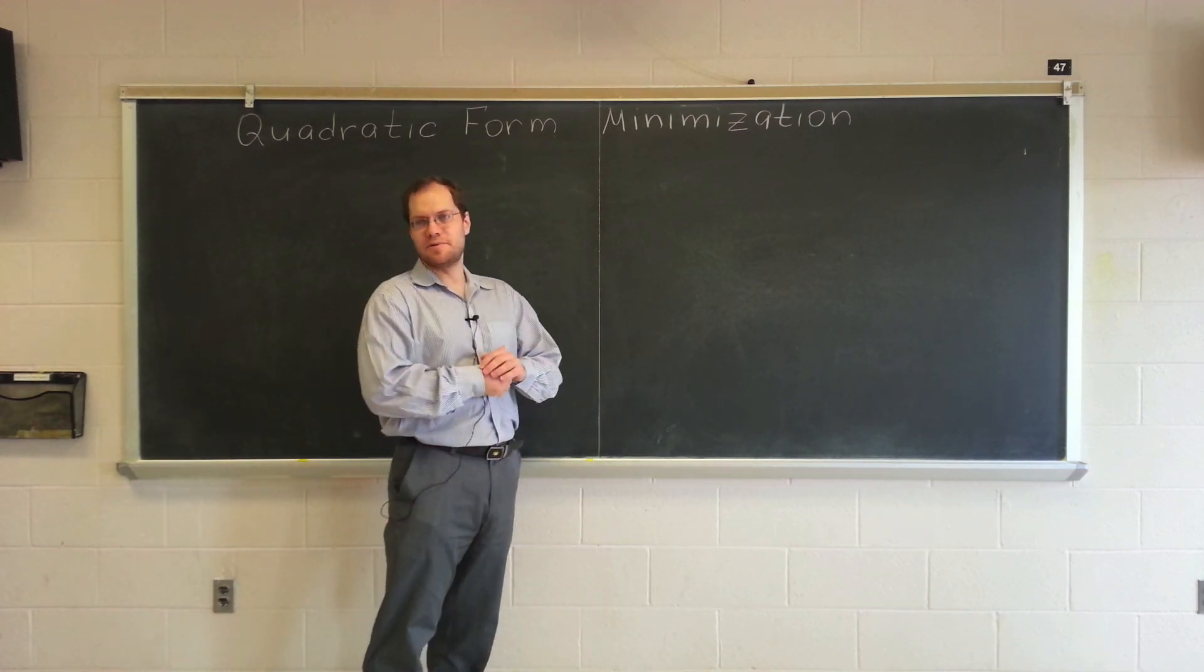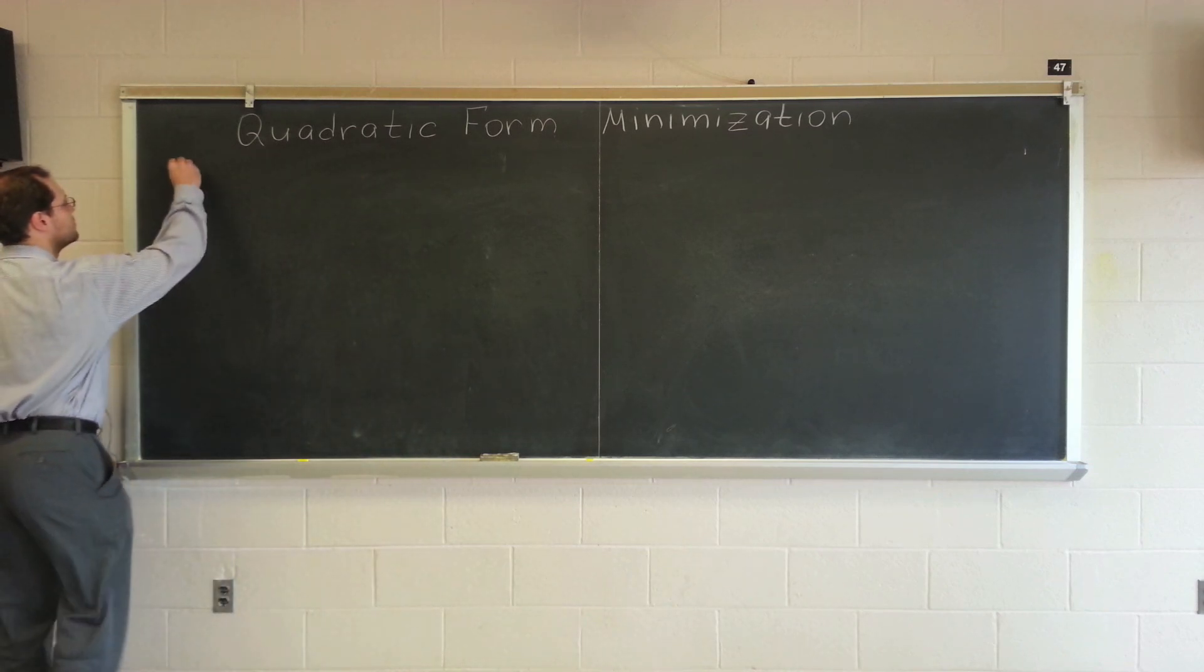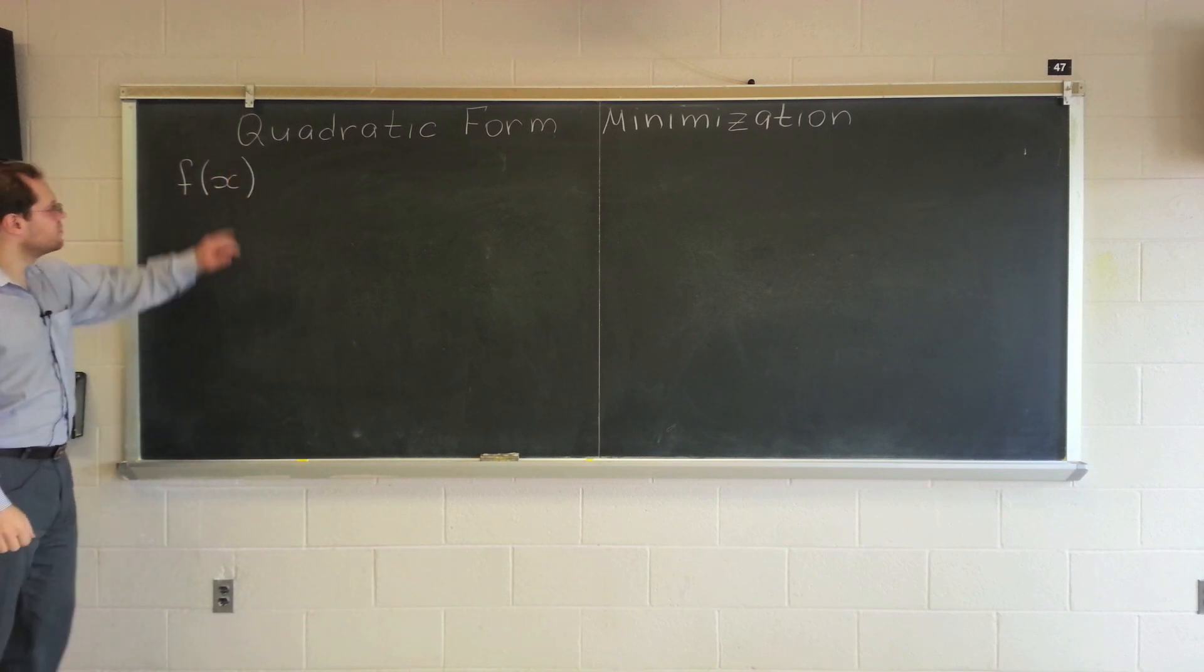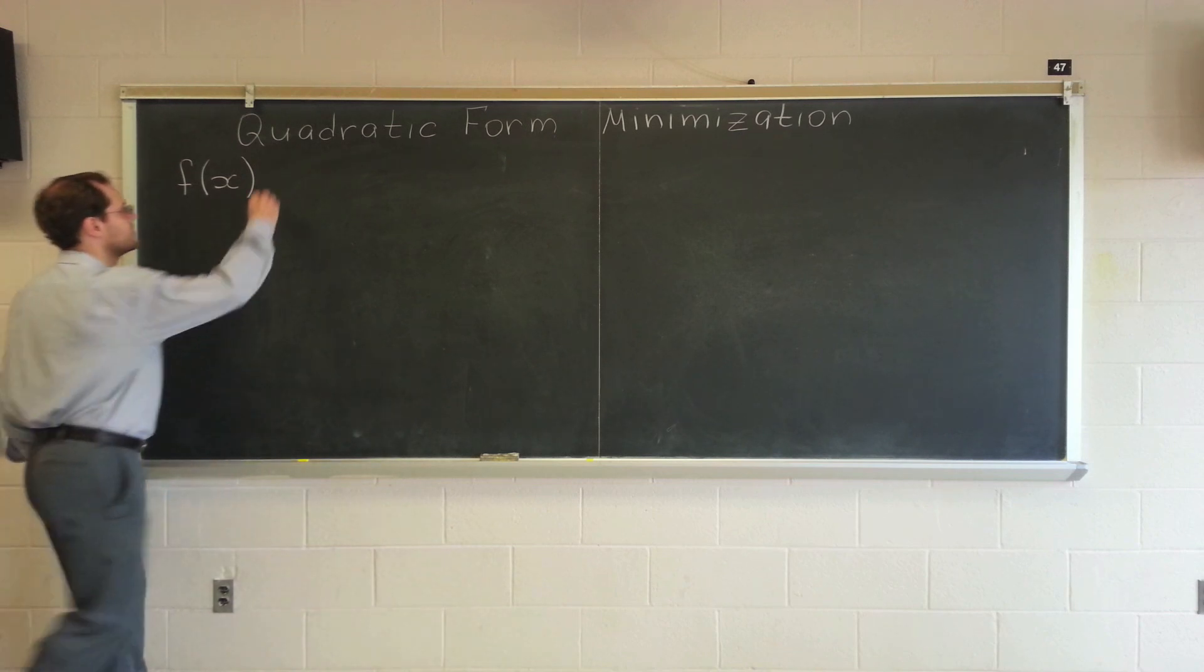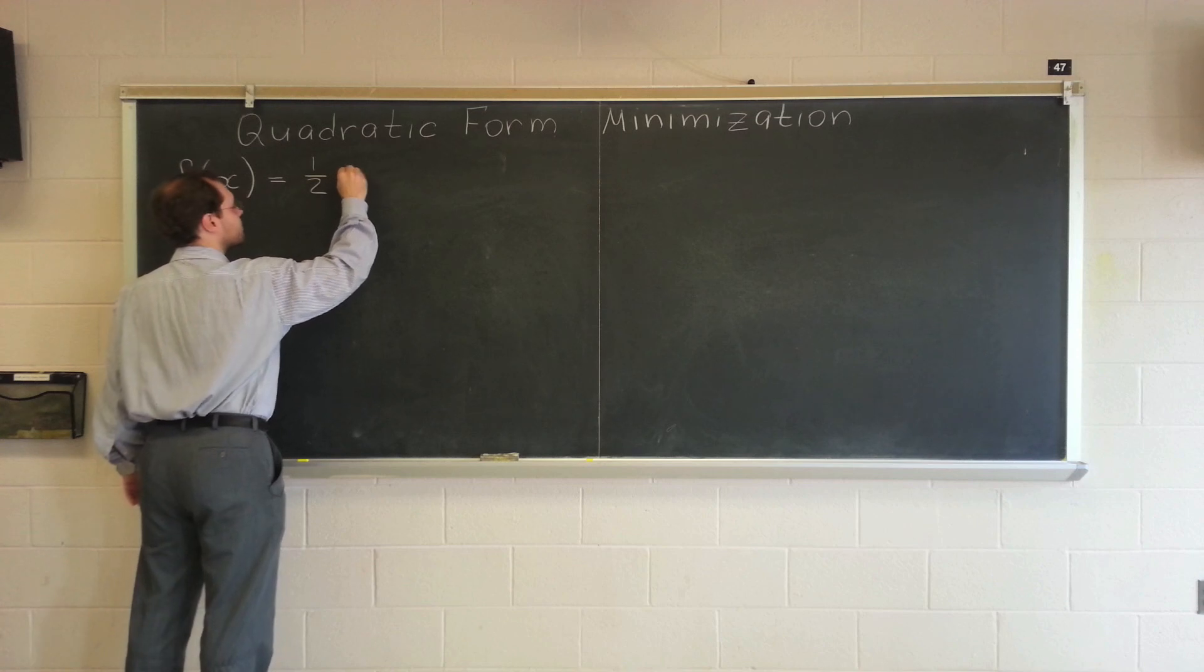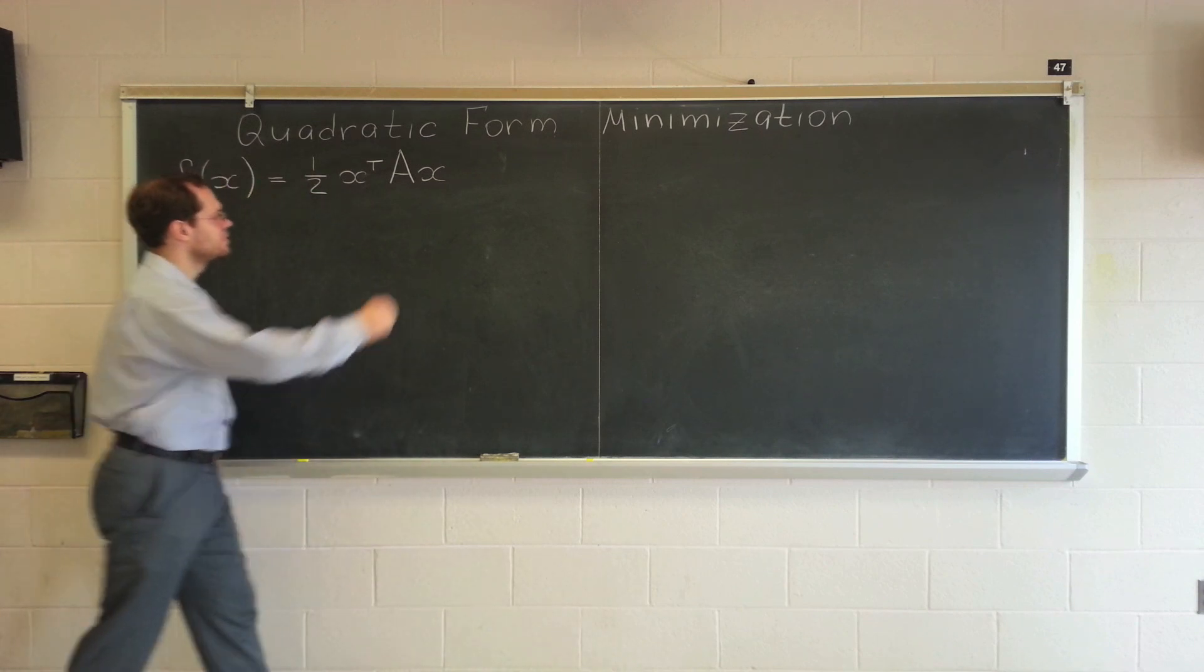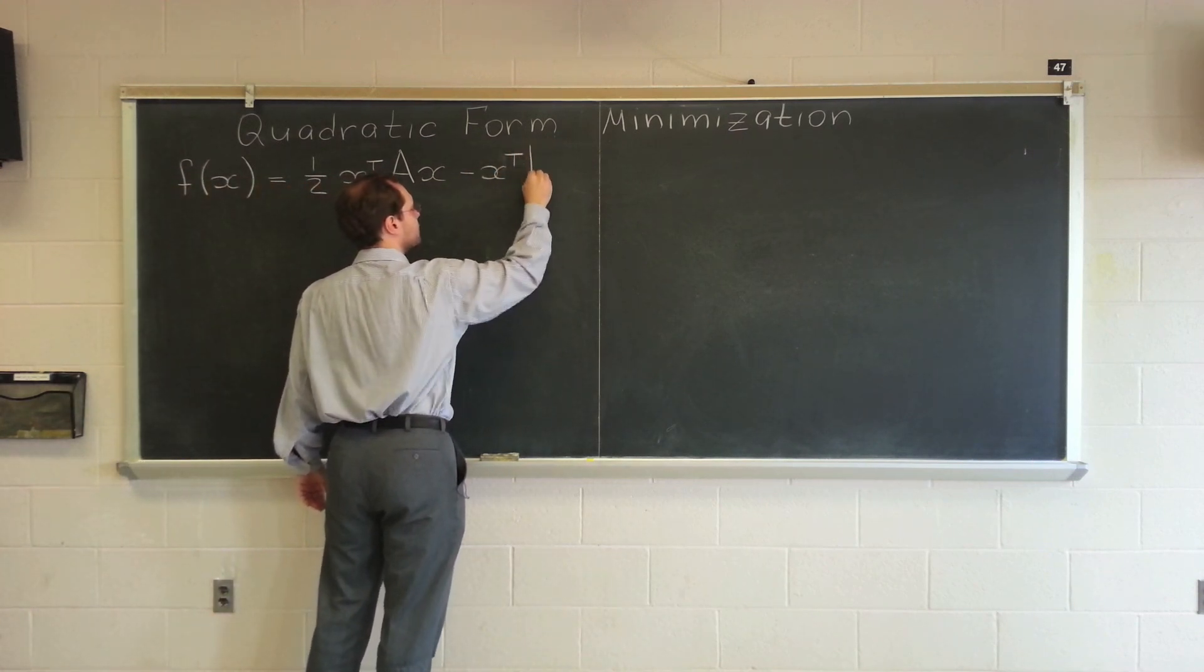The first one is the problem of quadratic form minimization. In linear algebra notation, it's formulated the following way. Consider a function f(x), where x comes from R^n, x1, x2, through xn. It's given by this expression: one-half x transpose Ax, minus x transpose b.